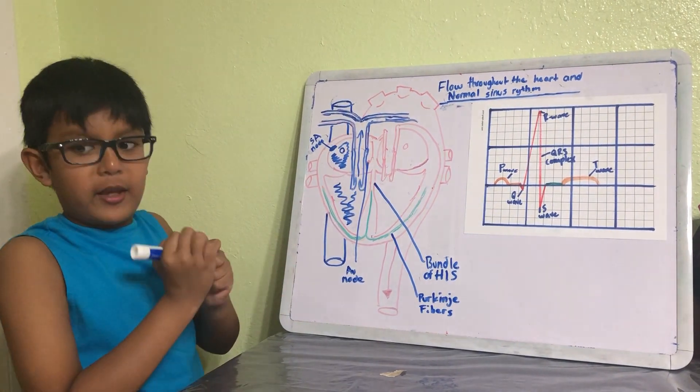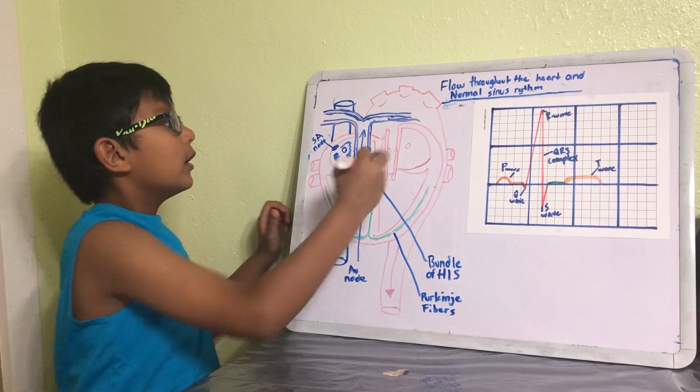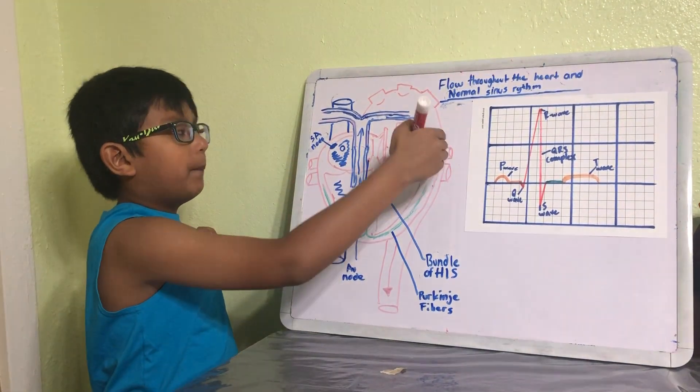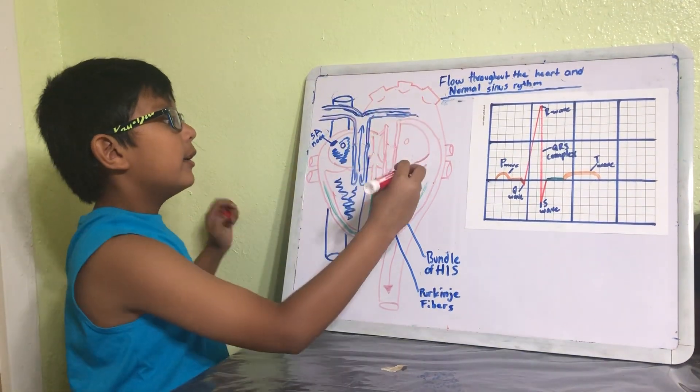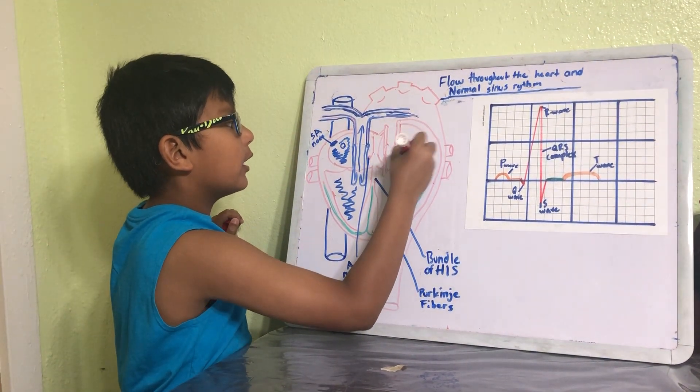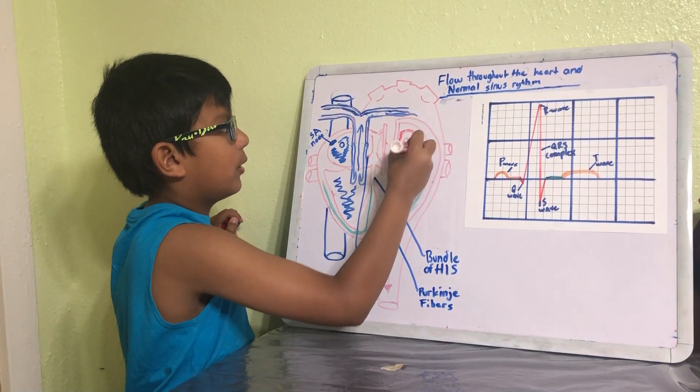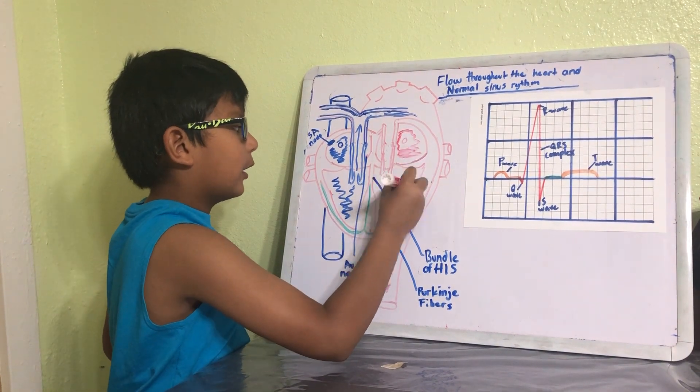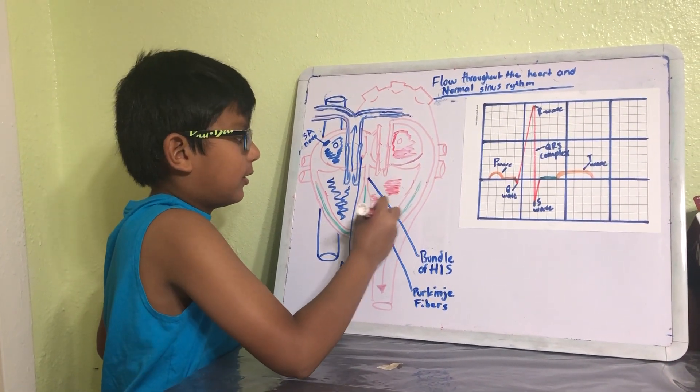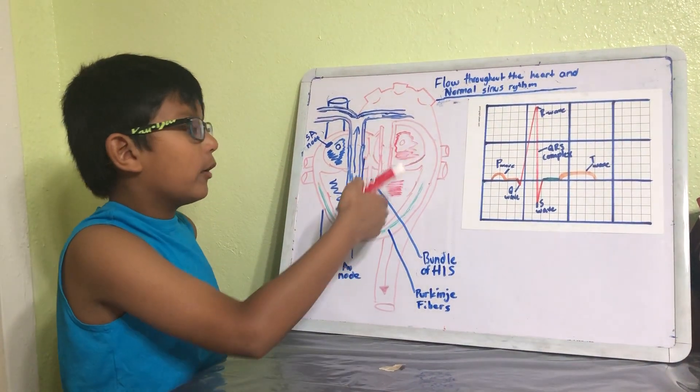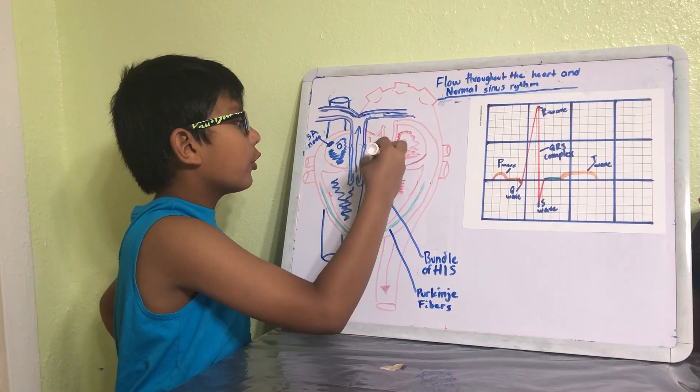Then when I come back, I'm gonna go in through the pulmonary vein and then start filling in this left atrium. Then I'm gonna go down here and fill up the left ventricle. Now as you can see or notice, the muscle here is bigger because I need to push blood all the way out to all the organs in the body.